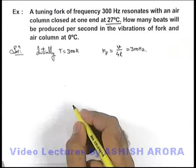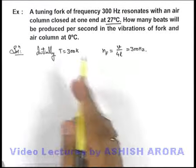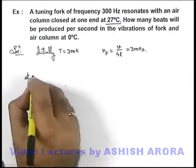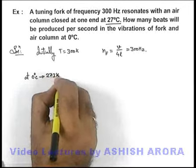Now it is asking the number of beats produced per second at zero degrees centigrade. So we can say at zero degrees centigrade, which is 273 kelvin temperature.